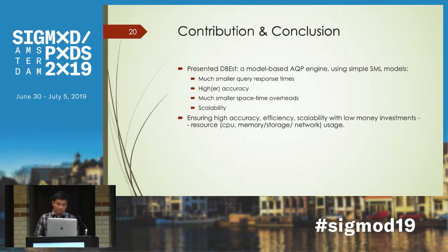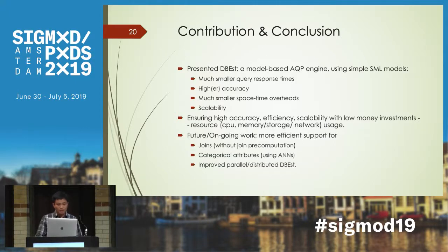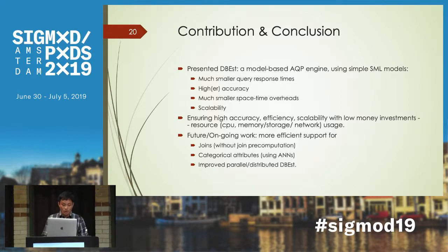In summary, DBS is a model-based AQP engine using simple statistical machine learning models, which achieves much smaller query response time, higher accuracy, much smaller space overhead, good scalability, and requires very low cost investment. Future work includes more efficient support for joins — currently joins require pre-computation — and for categorical attributes, we may use artificial neural networks. We also need to improve the parallel DBS.